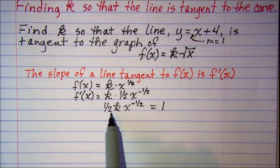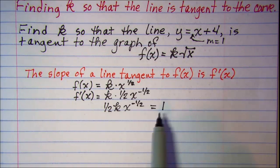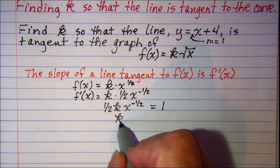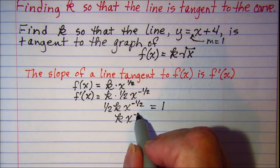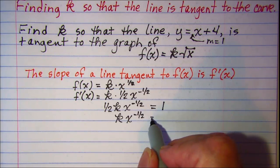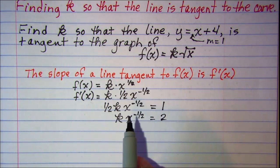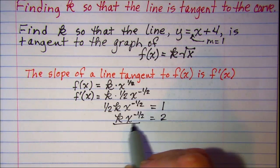Let's find k. Multiply both sides by two. We have k x to the negative one half equals two. And then if we divide both sides by x to the negative one half...